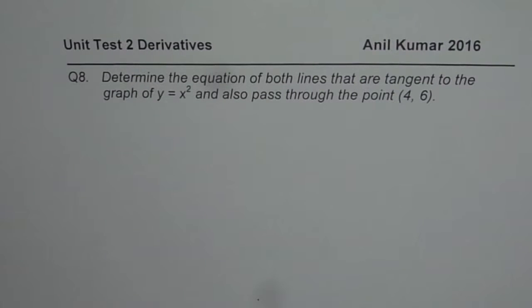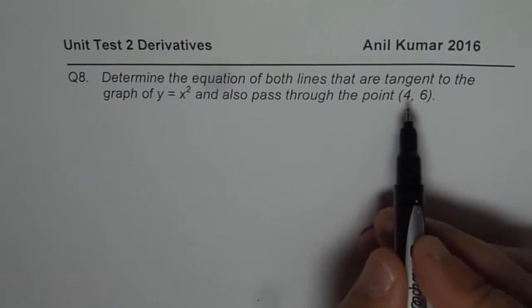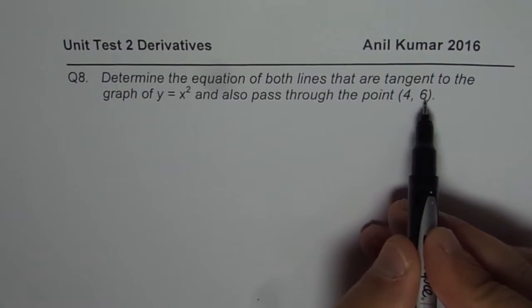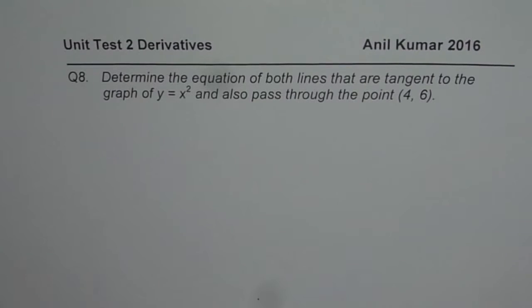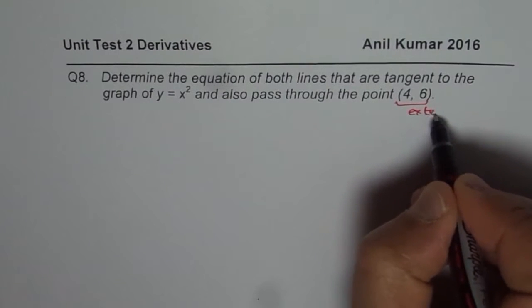I'm Anil Kumar and here is the solution to question number 8 from my unit test 2 paper. The question is: determine the equation of both lines that are tangent to the graph of y equals x squared and also pass through the point (4, 6). Now, (4, 6) is an external point, so in this particular question we are working with an external point.